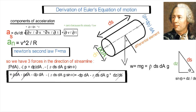Let's simplify the equation. Multiplying through, we get p·dA minus p·dA minus dp·dA minus ρ·dA·ds·g·sinθ. The p·dA terms cancel, and substituting sinθ = dz/ds, the ds terms cancel, leaving us with: minus dp·dA minus ρ·dA·g·dz.